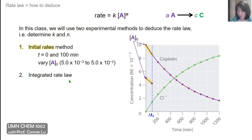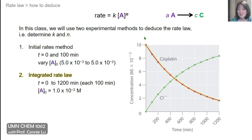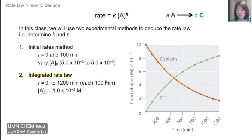The integrated rate law works differently — you simply monitor the concentration over the whole time course. For example, taking data on concentration of A at each time point from 0 to 1200 minutes, with a data point every 100 minutes, using just one value of A₀ and running one experiment.